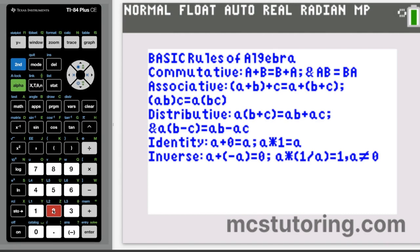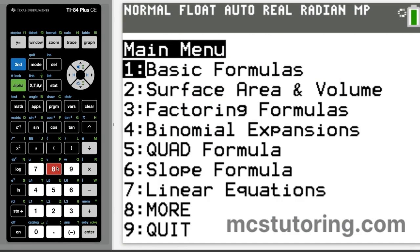And then distributive, you're going to be distributing a, like a times the quantity b plus c would be ab plus ac. Same thing, you do a times quantity b minus c is ab minus ac. We also have the two identities, a plus zero equals a, and a times one equals a. And then the inverse, we have a plus negative a is zero, and a times one over a is one. Again, a doesn't equal zero.